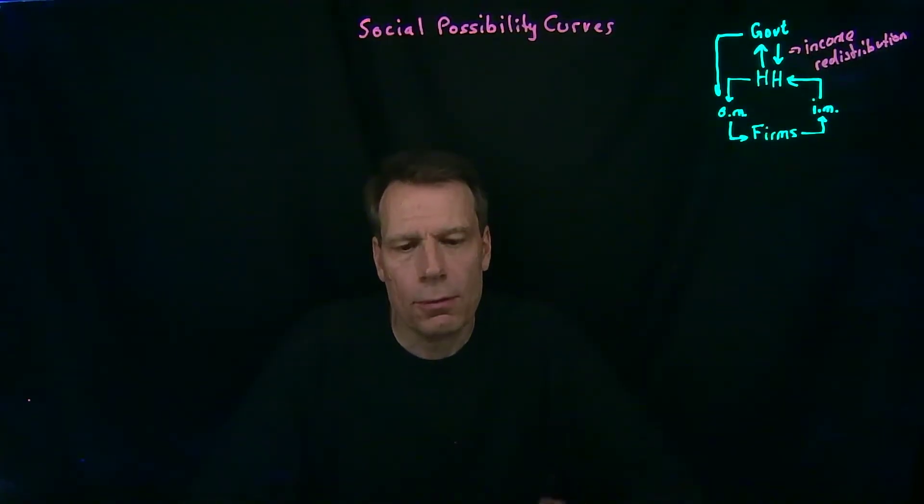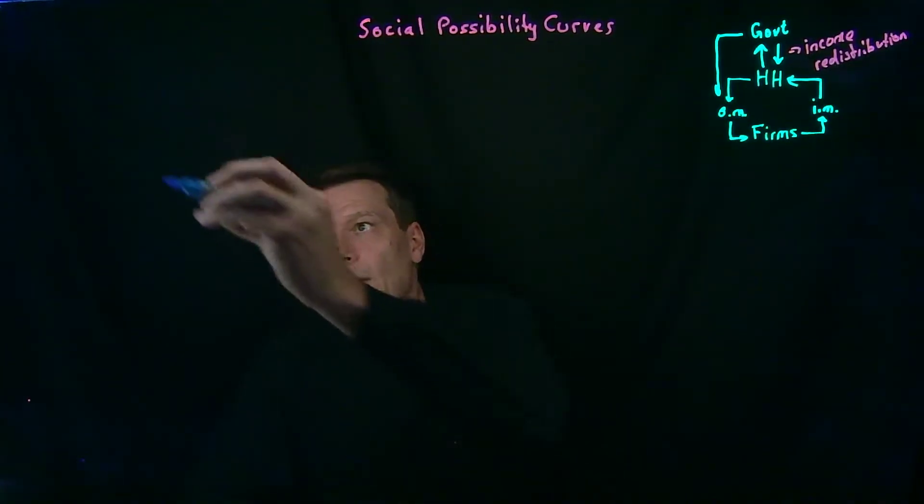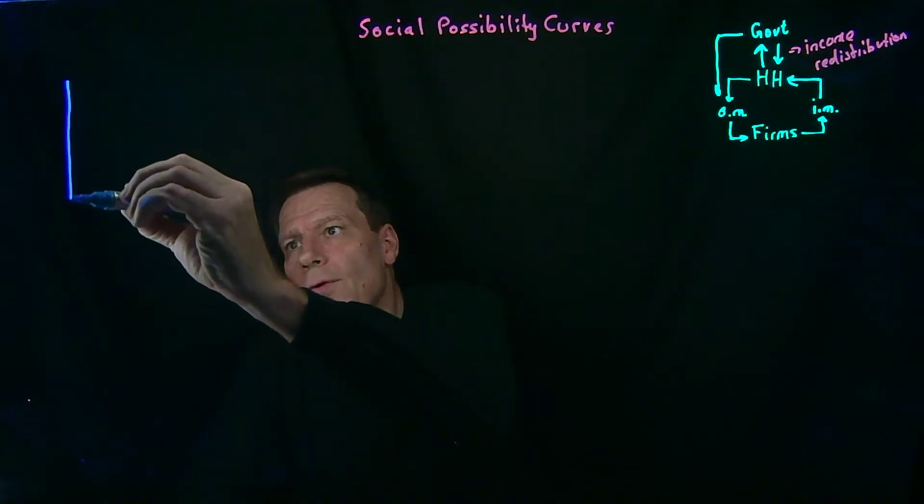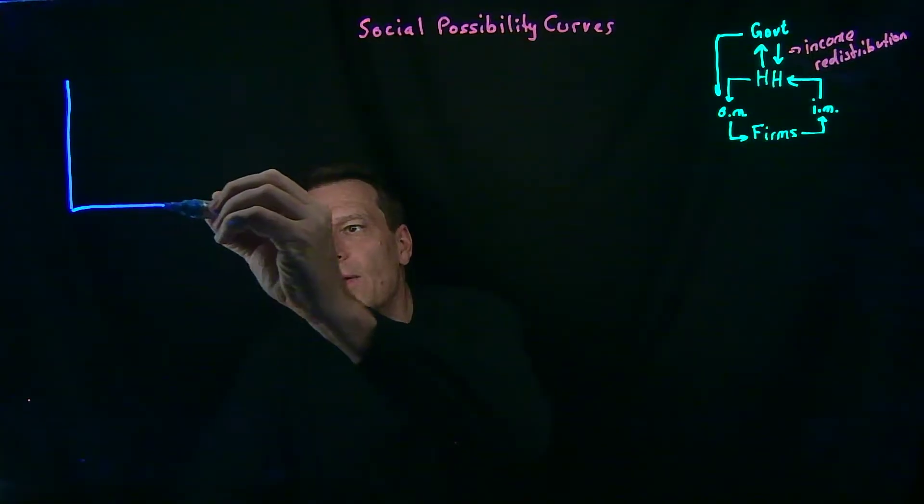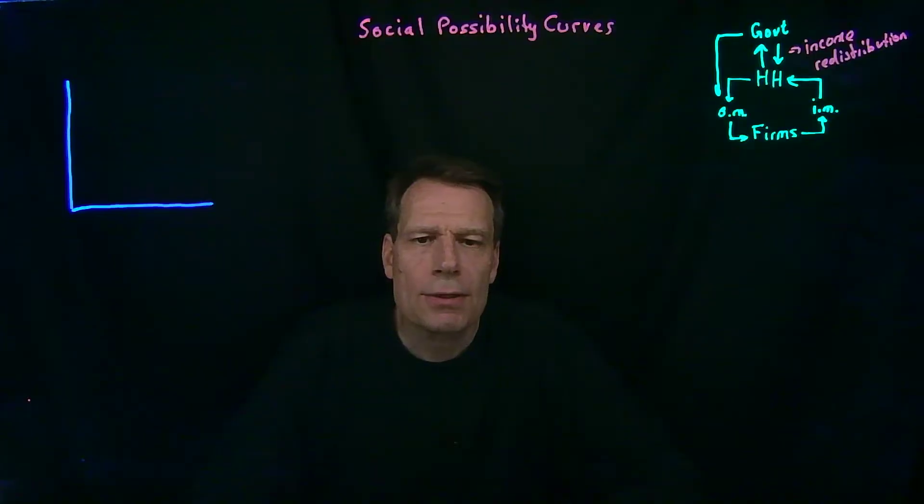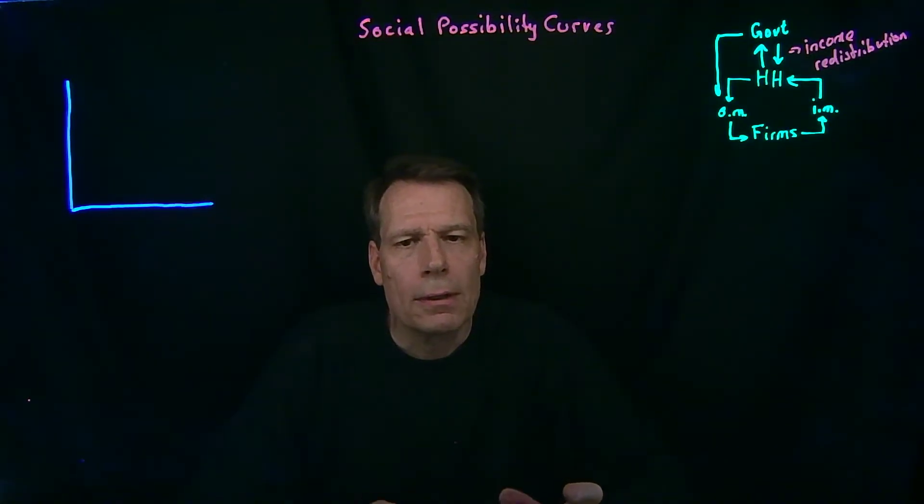We've talked about production possibility curves before, where we put goods on the horizontal and vertical axis, and we asked the question, if all of society's resources were used to produce those two goods, what combination of quantities would actually be possible?